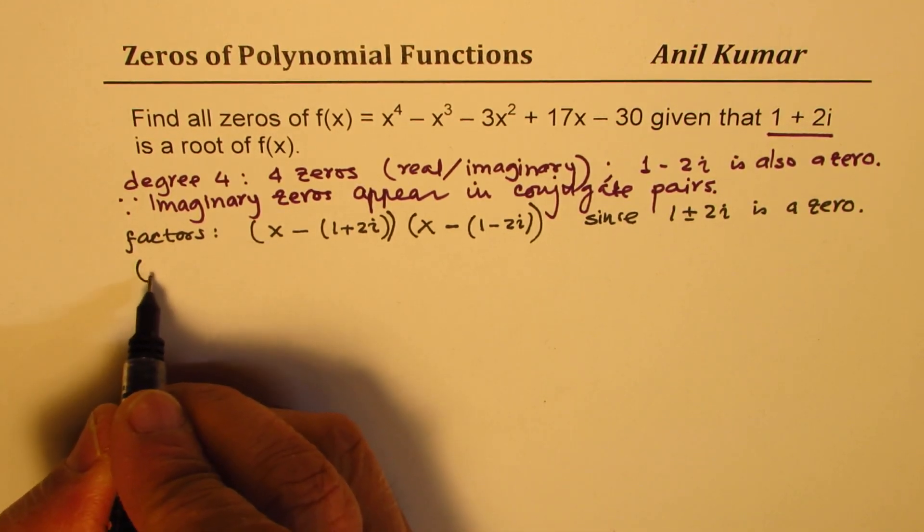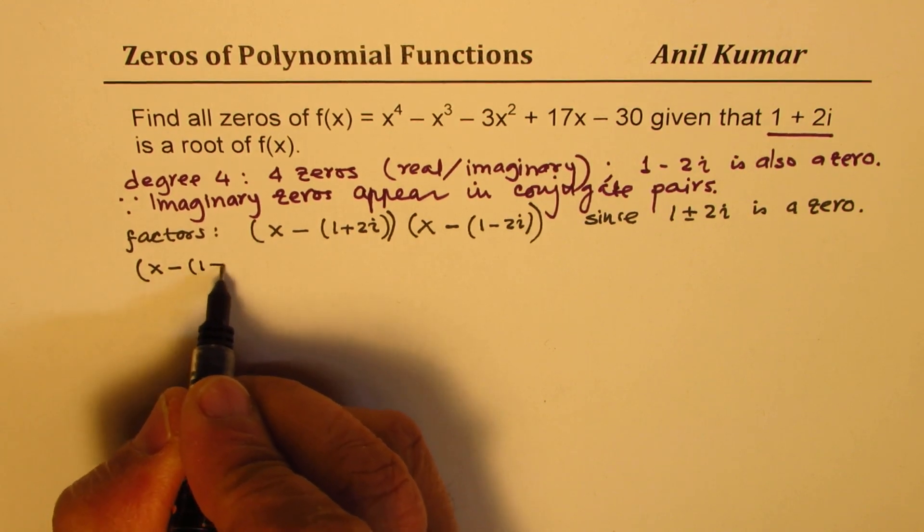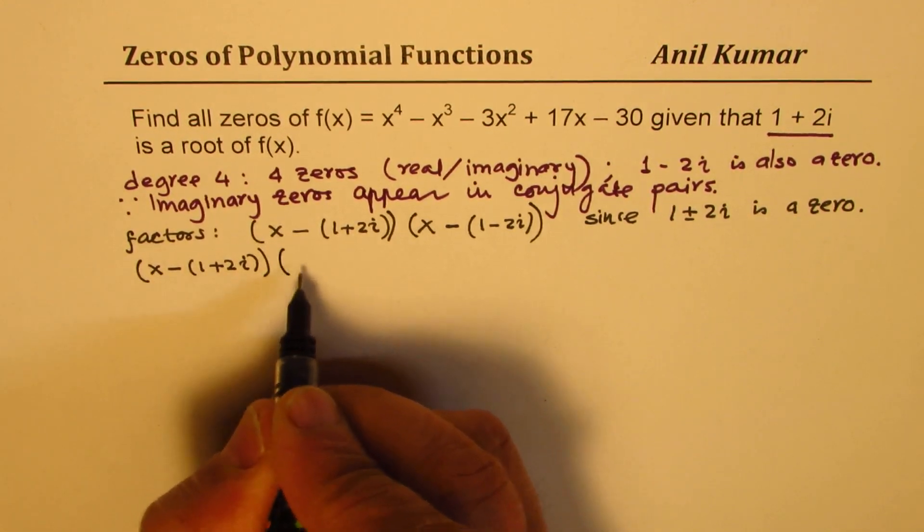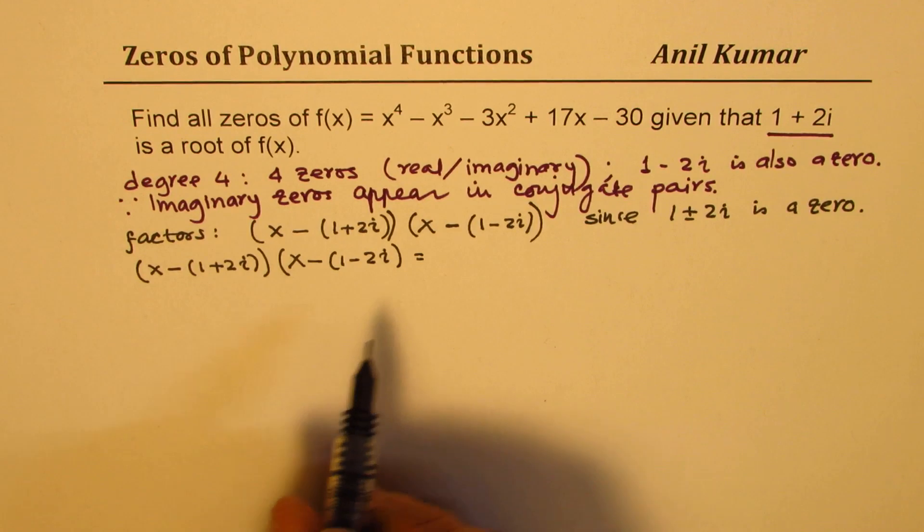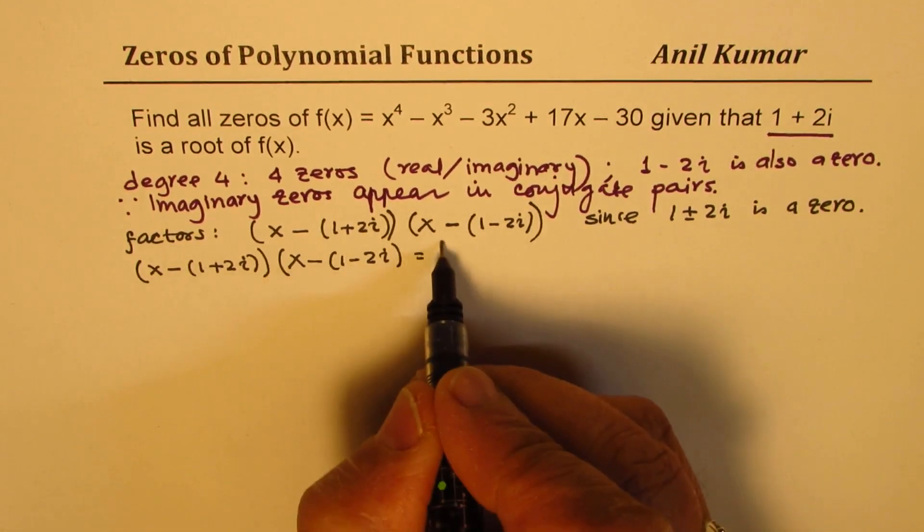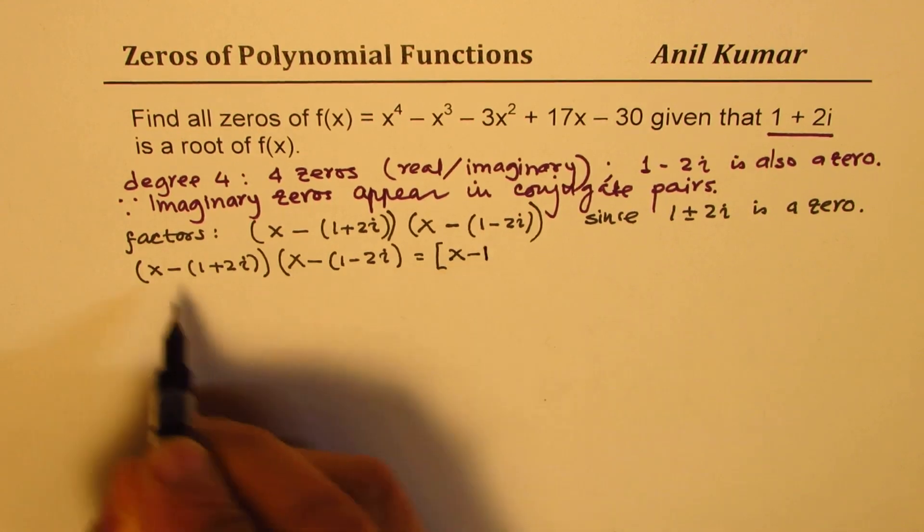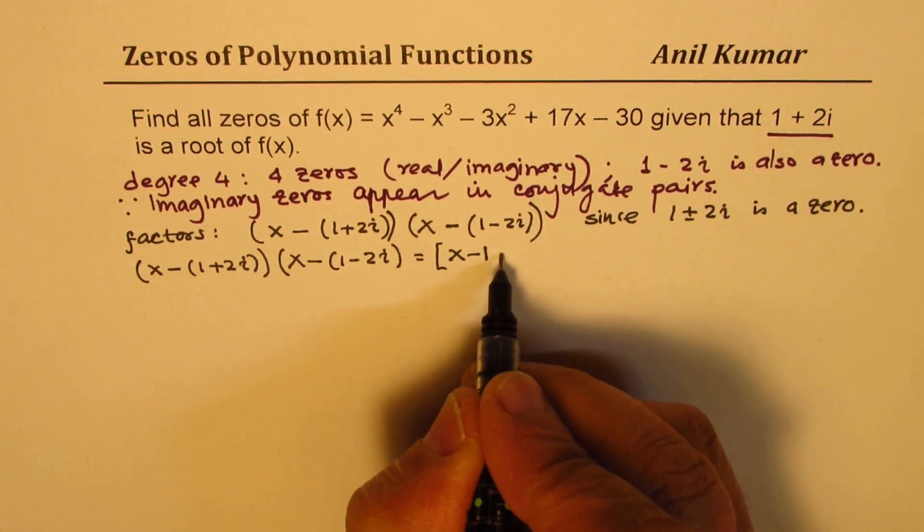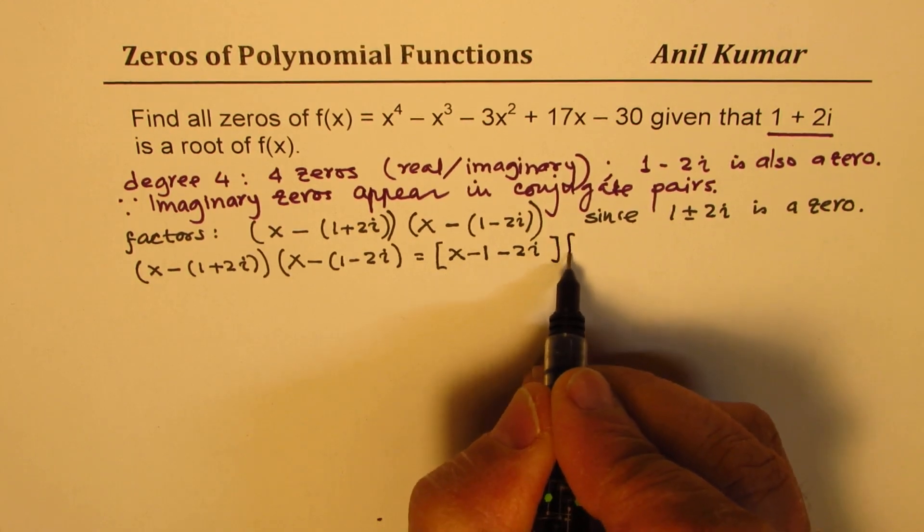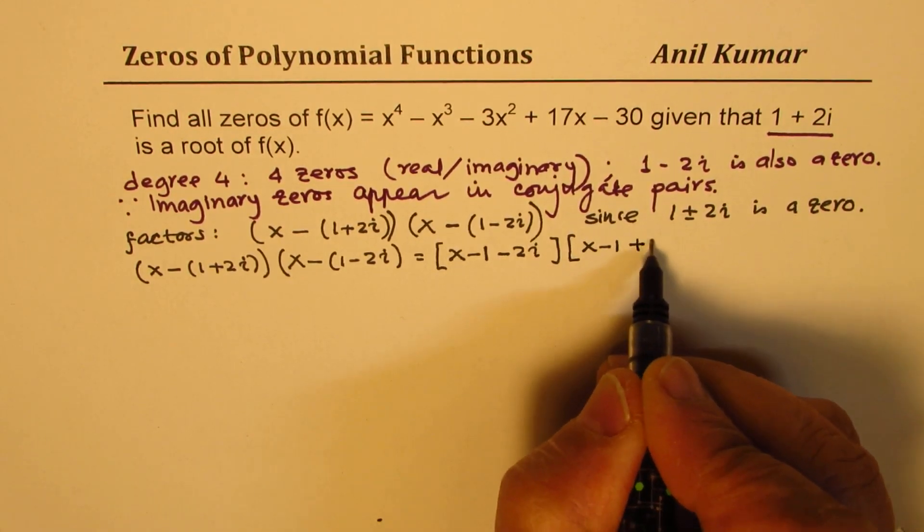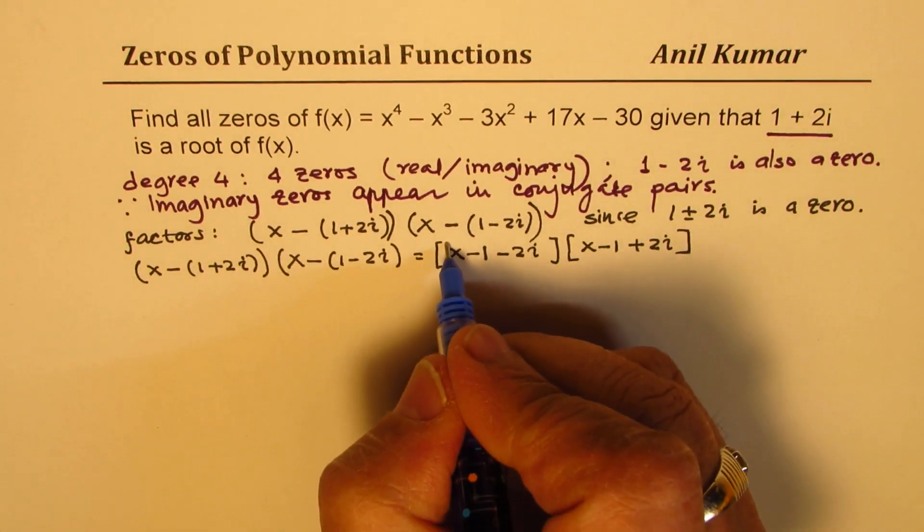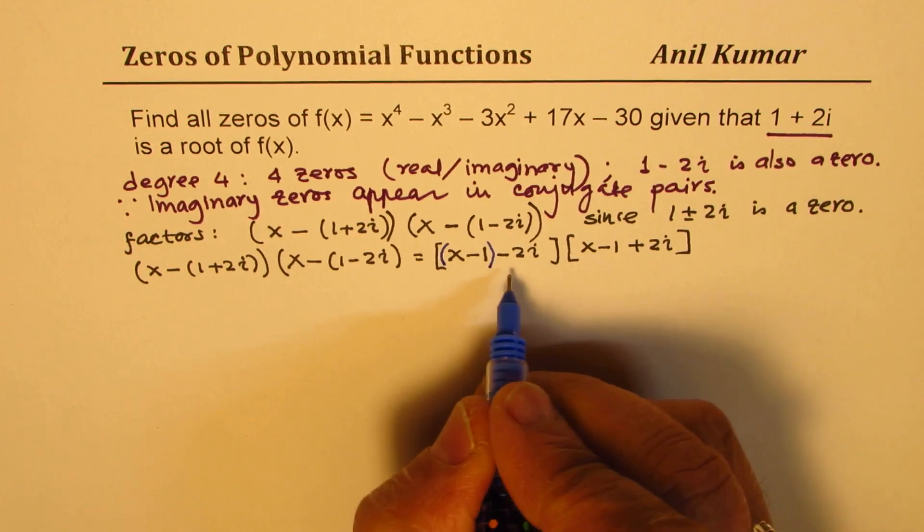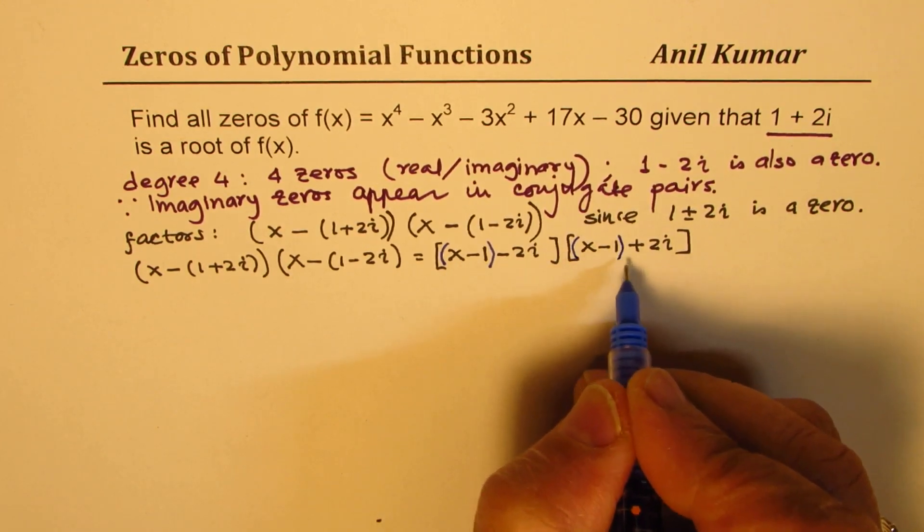What we'll do now is expand (x - (1 + 2i))(x - (1 - 2i)). Easy way to do this is to open the bracket, and we can write this as (x - 1) and then we have minus 2i. The other one gives you (x - 1) plus 2i. Now, look at it in this fashion.